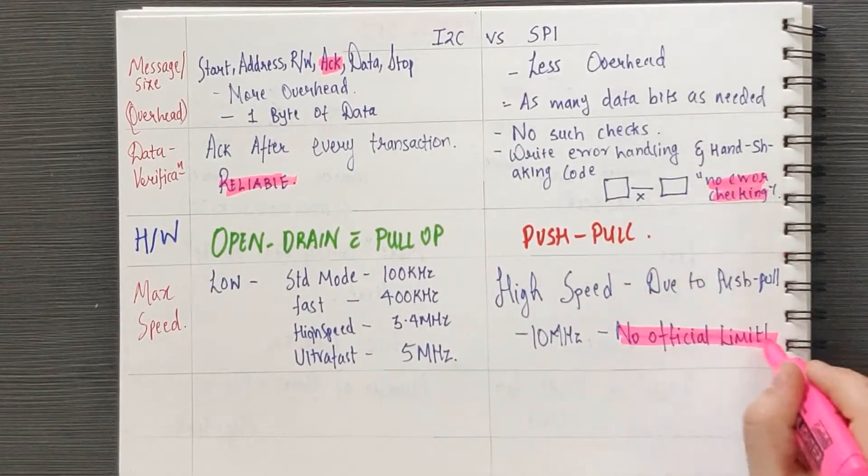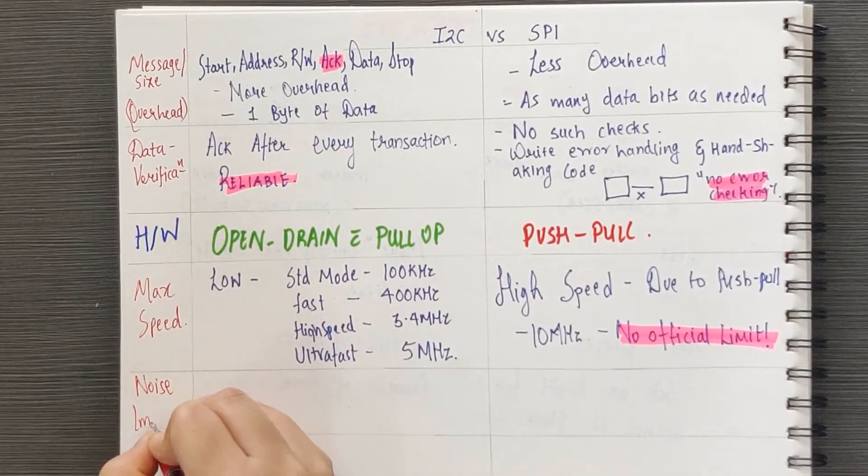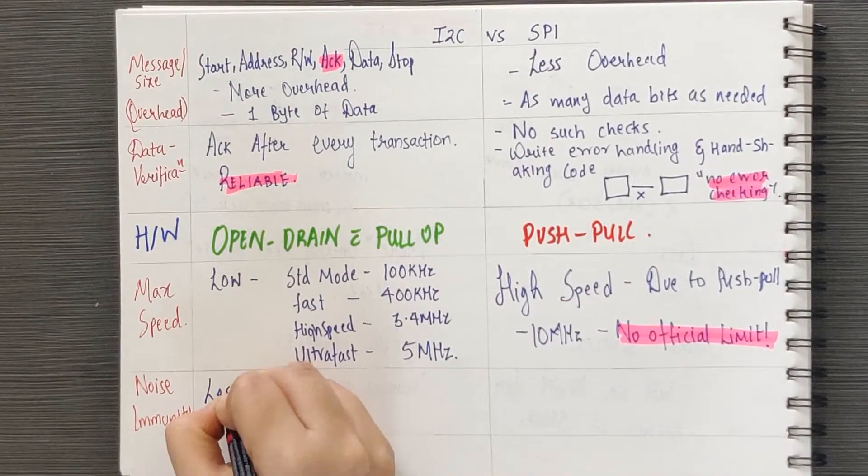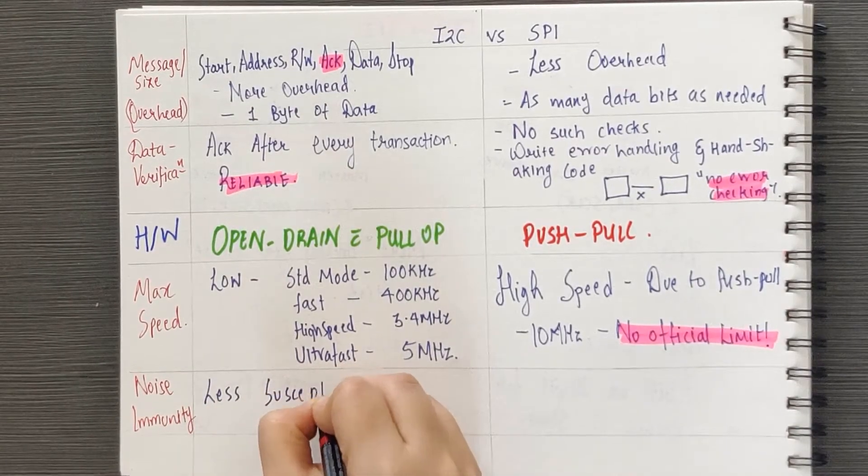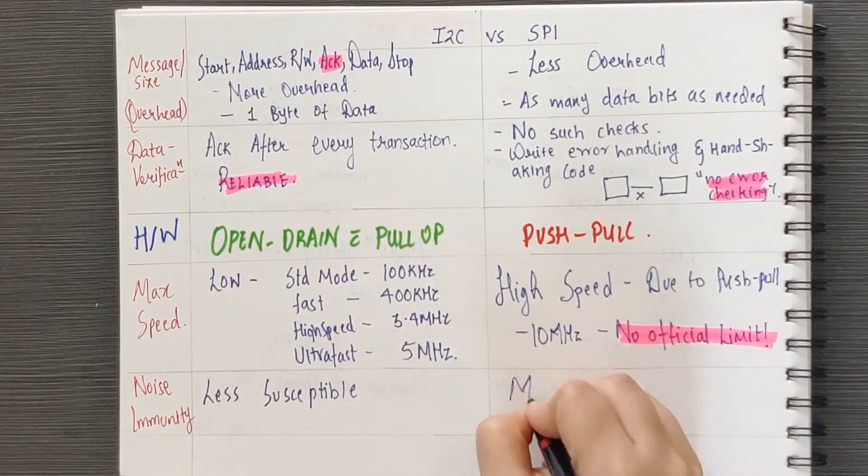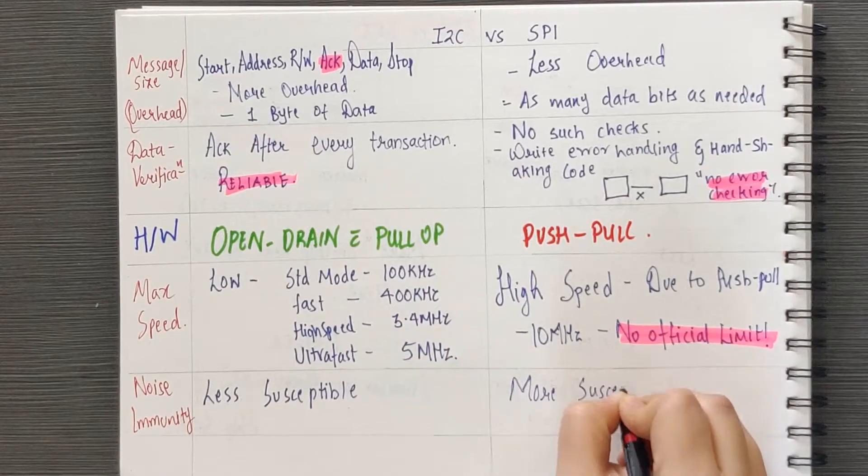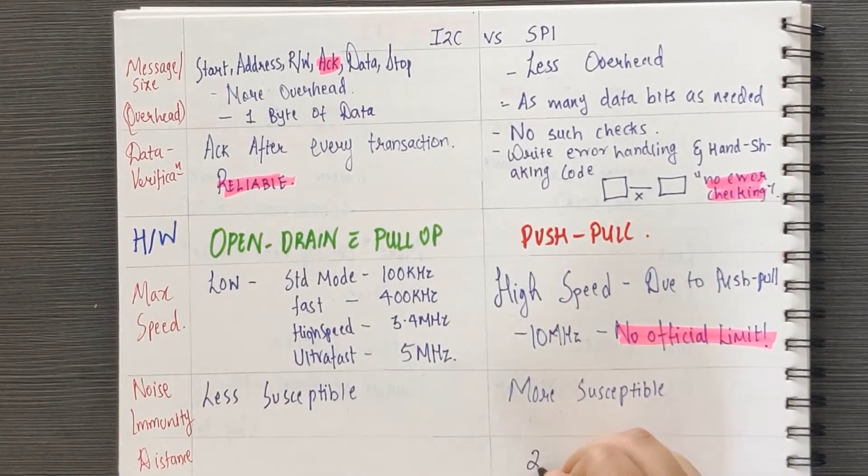What is the implication of this high speed? Due to this high speed, SPI is also more susceptible to noise. Thus, it is used if the distance is less than 20cm. For distances of around 1m, I2C is used.